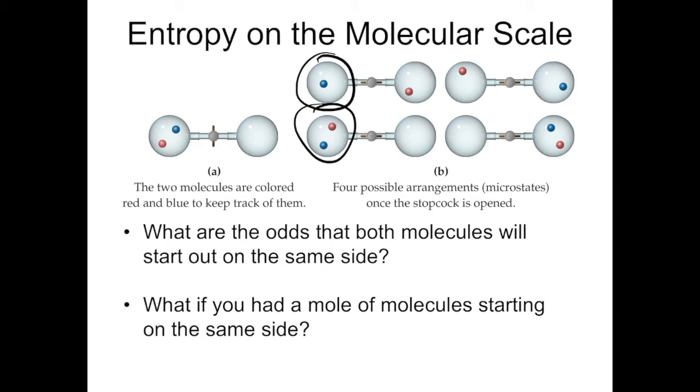You could also have done this by looking at the chances of the molecule showing up on the right hand side. And again, two out of the four options, so the odds are one in two. So the odds for any given molecule ending up on the left hand side or the right hand side is one in two. Because we have two different molecules, the odds that both will end up on the same side are one in two times one in two.